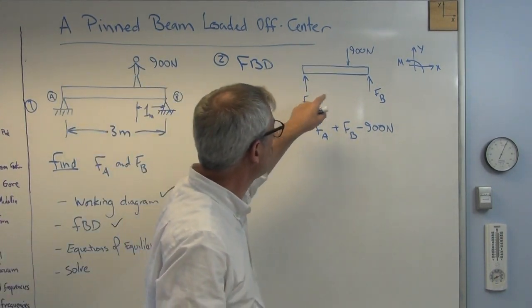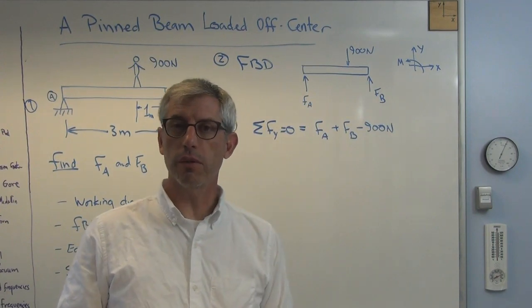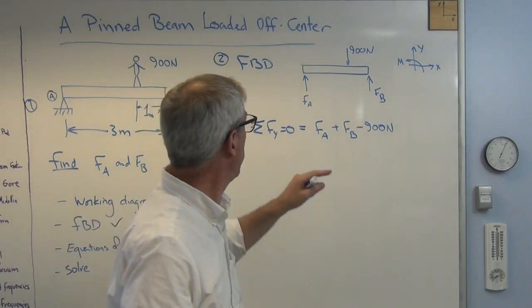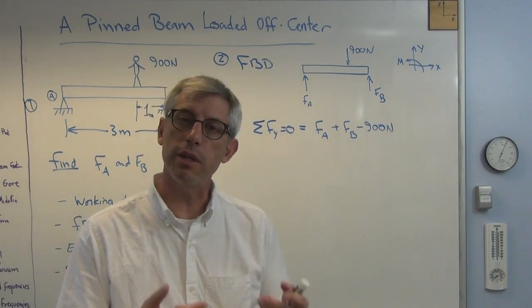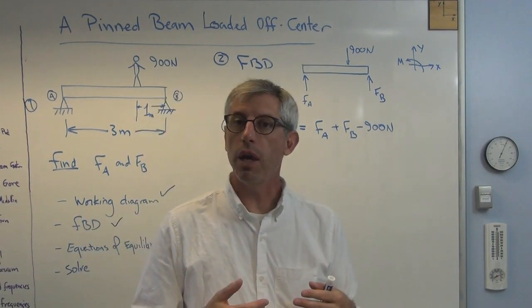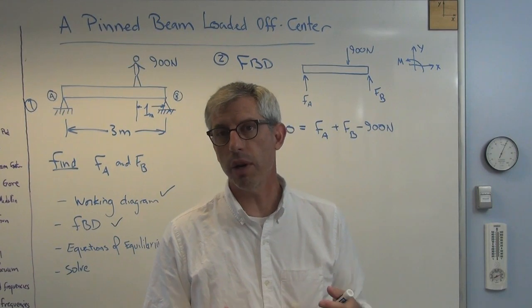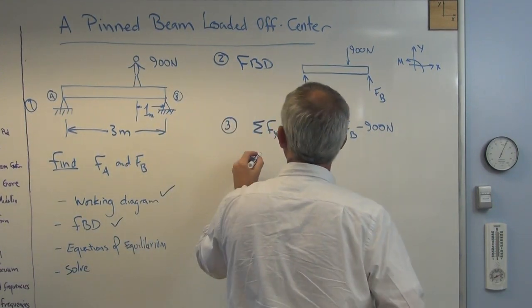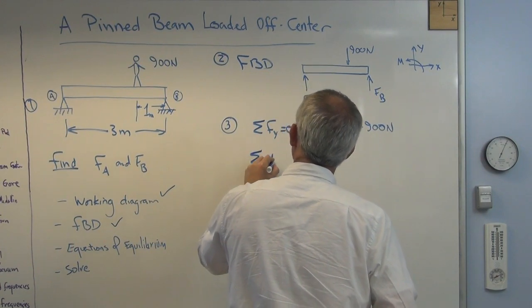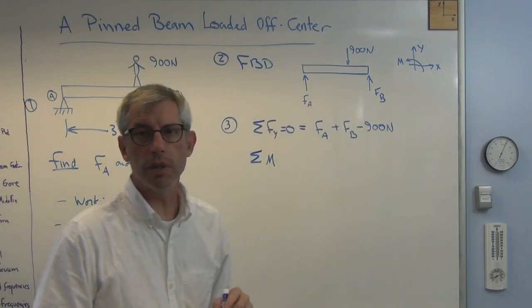Now, I drew those forces up because it's pretty obvious they have to be vertical or else the beam would be moving. If you guess wrong, if you guess the wrong directions for FA and FB, don't sweat it. The math will take care of you, and it'll give you a negative number for a force. That's math's way of telling you that you drew the force in the opposite direction that it's actually going. So that's okay. If you guess wrong, math will take care of you. Assuming you do it right?